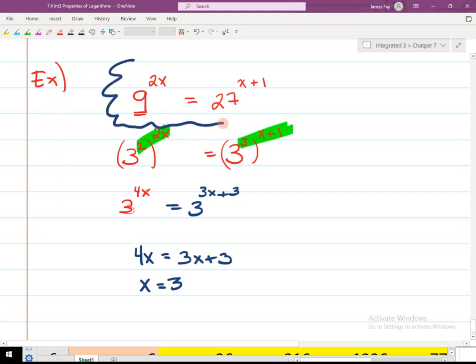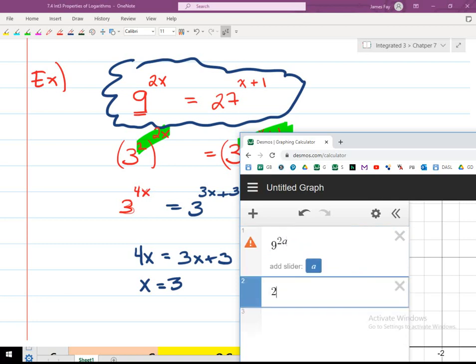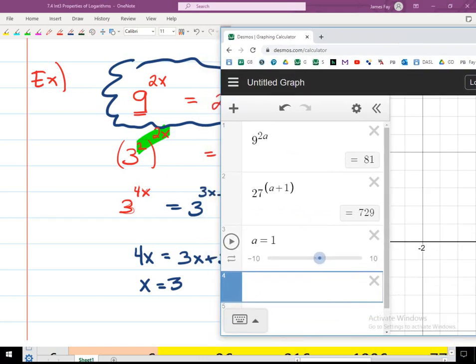Now we've done a lot of work there, so I'm going to go back to Desmos and see if that works. If I type in 9 to the 2a and type in 27 to the a plus 1, if I make a go to 3, does it give me the same result? That is the only value in which those two exponential expressions are equivalent to one another. You guys feel comfortable with a little bit of this? Your homework is going to ask you towards the end of it. There's 10 questions. Towards the end of it, they're going to ask you to utilize your knowledge about these things.